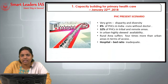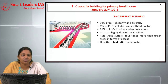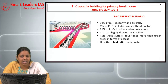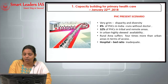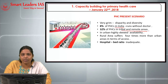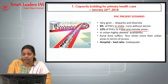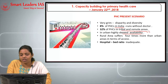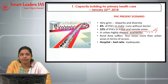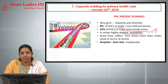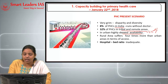The present scenario of primary health care centers is very grim because of disparity and diversity. In India, 8% of primary health care centers are running without doctors, and 32% are located in tribal and remote areas. In urban areas, primary health care centers are highly skewed, with two-thirds of the urban population out of their purview. Rural areas suffer four times more than urban in terms of accessibility, and the hospital-to-bed ratio is highly inadequate.